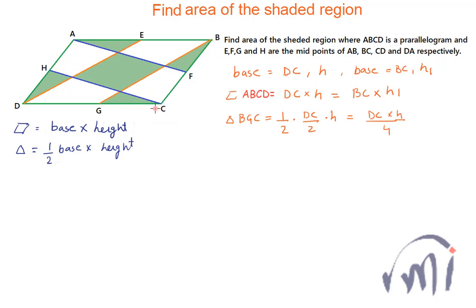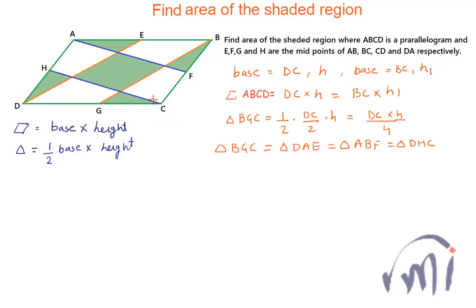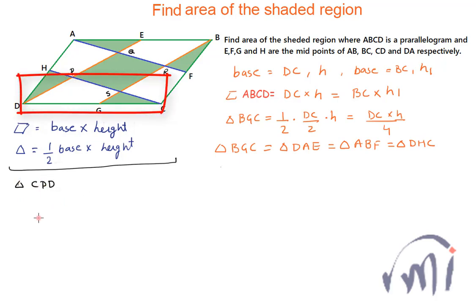The area of triangle BGC equals one-fourth of the parallelogram. Similarly, triangle DAE has area equal to triangle BGC, because AE is half of AB which equals DC, and the heights are the same. These two areas also equal the area of triangle ABF and the area of triangle DHC. So all four corner triangles are equal. Now let me name the intersection points as P, Q, R, S, and consider triangle CPD.